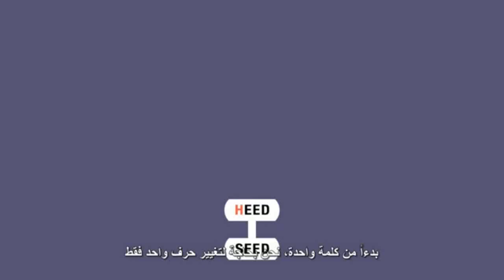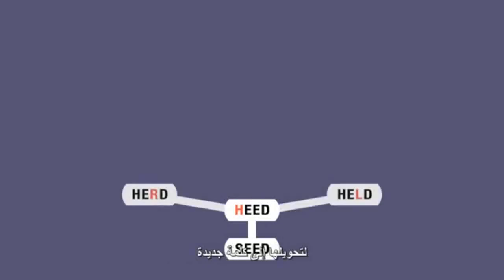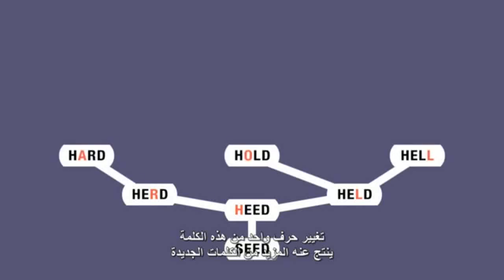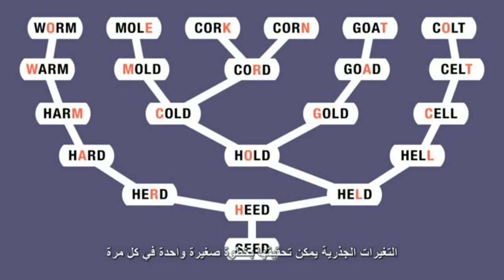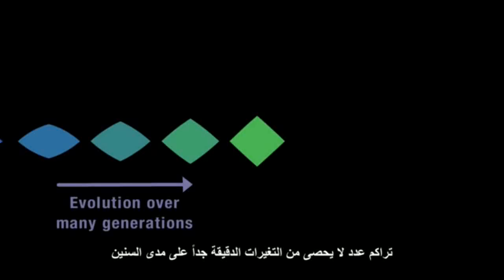Starting with a word, we only need to change one of its letters to turn it into a new word. Changing one letter from this word results in further new words. And if we carry on repeating the process, we can produce words that differ dramatically from the original. Dramatic change can be achieved one small step at a time. And this is what happens with evolution — except that with evolution, countless mostly minute changes have accumulated over millions of years.